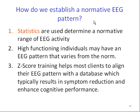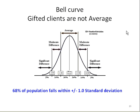How do we establish a normative pattern of EEG? We can use statistics, which help us to determine a normative pattern by comparing our client with a database. High-functioning individuals may have an EEG pattern that varies from plus or minus one standard deviation. However, for most of the clinical population, Z-score training, which relies on standard deviations and databases, can help most clients align their EEG pattern with a database, resulting in symptom reduction and enhanced cognitive performance. A Gaussian curve clearly shows that 68% of the population falls within plus or minus one standard deviation, sometimes called plus or minus one Z-score.